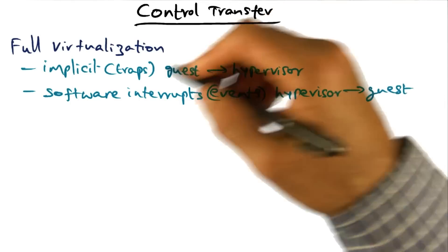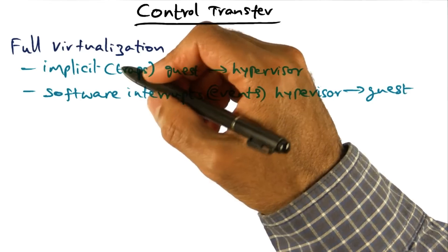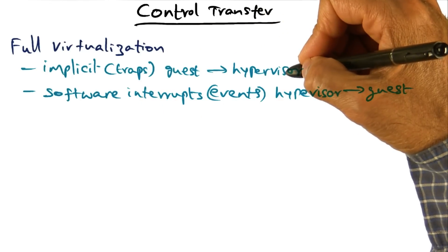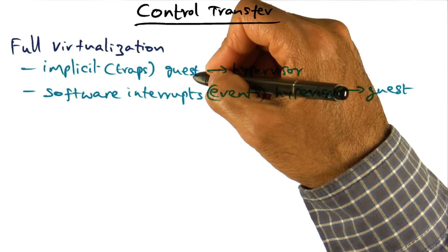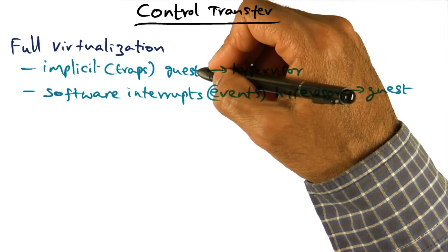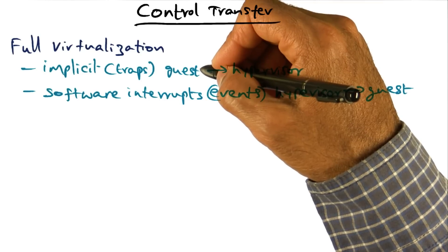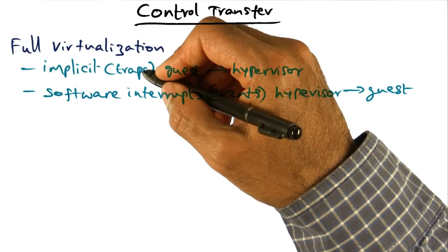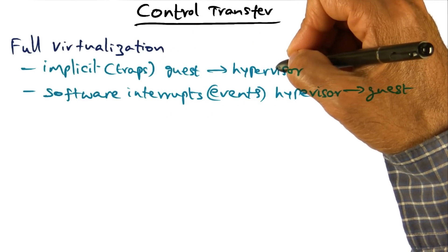So control transfer, in a fully virtualized setting, happens implicitly from the guest to the hypervisor. When the guest operating system executes any privileged instruction, because it thinks it can do it, it'll result in a trap, and the hypervisor will catch it and then do the appropriate thing.